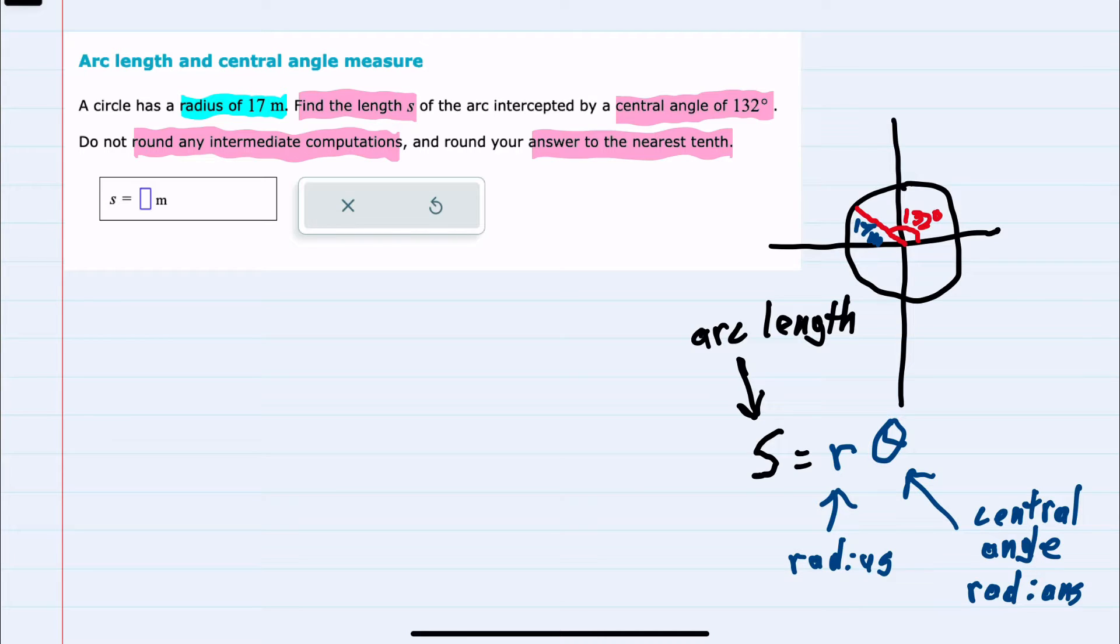So as long as we have the central angle in radians, we can take that central angle, multiply by the radius, and we will have the length of the arc that's being described.